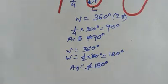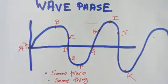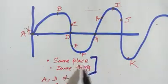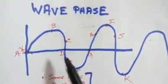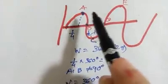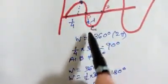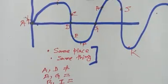To summarize: wave phase specifies the location of a point within a wave cycle. Two points are in phase if they are at the same position and moving in the same direction. A and D are not in phase; A and G are in phase. C and H are not in phase; C and J are in phase. Using the total wavelength as 360 degrees, we can calculate the phase difference between any two points. This shows what wave phase is and how to determine whether points are in phase or out of phase. Thank you for watching.